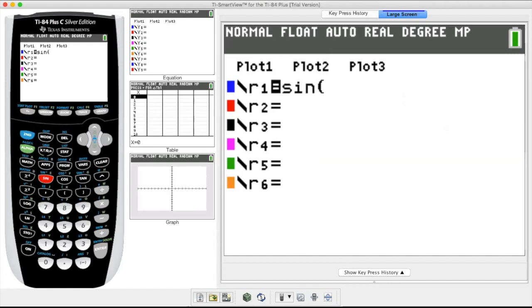So let's do the one that we just did by hand, which would be R equals sine theta. You got to hit your X T theta, your variable button right here, which you can see my mouse. Boom.